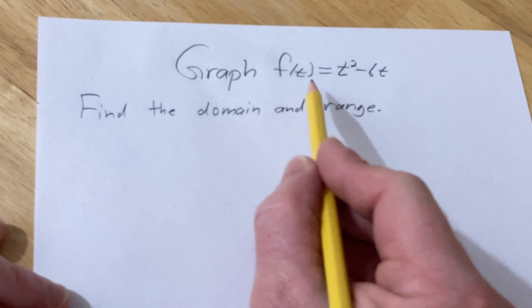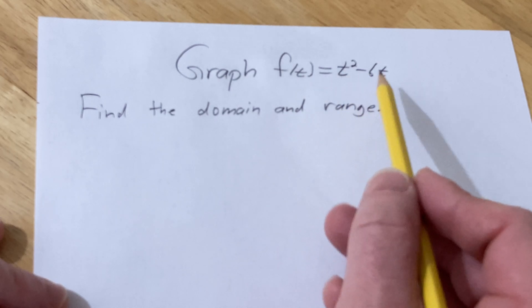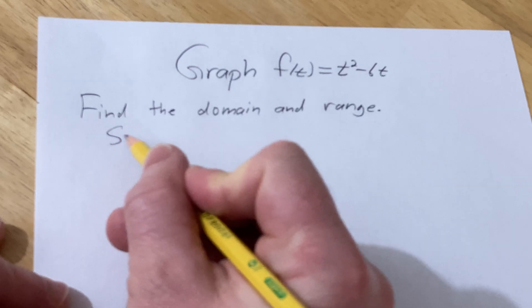Hi, in this video we're going to graph this function. We have f of t equals t squared minus 6t. We're also going to find the domain and the range. Let's just go ahead and jump into its solution.